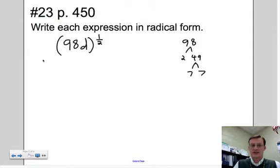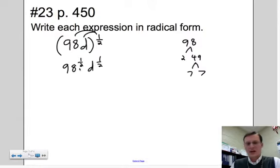So when I look at these, of course this is going to be distributed. 98 to the one-half power. So look at this factor tree. For every two I see, I'm going to pick one of them.